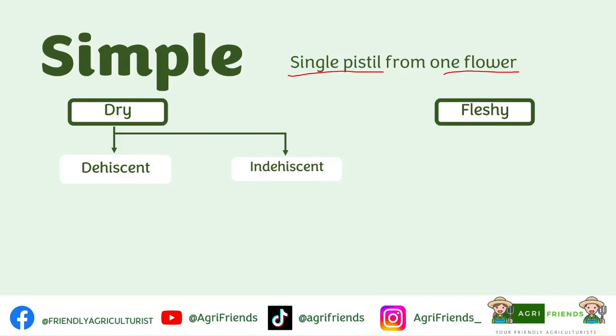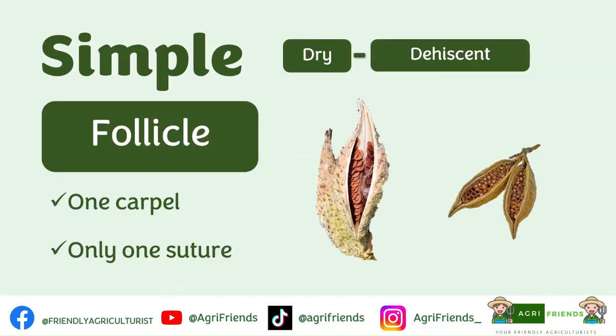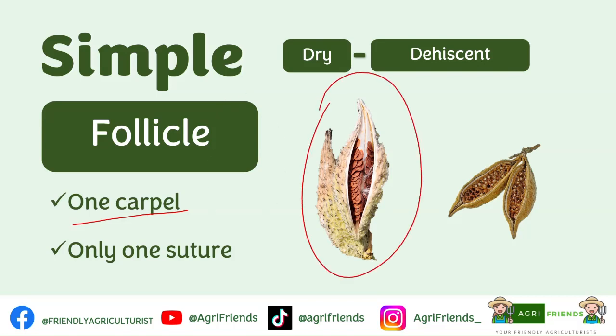For the dry dehiscent fruits, there are three types: the follicle, pod, and capsule. A follicle fruit develops from one carpel with several ovules. As you can see in the figure, this is an example of a follicle and these are the seeds. A follicle is a many-seeded fruit. At maturity, the fruit splits along only one suture, meaning it does not completely open or break into two.